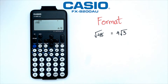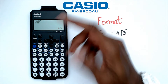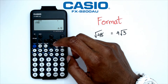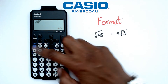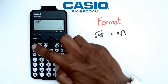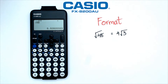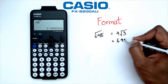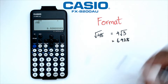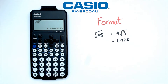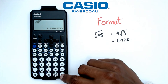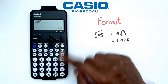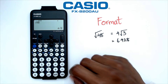Now this answer is in surd form. If we want this in a decimal, there's a couple of ways of doing this, but the shortcut I found quite handy is using the Shift and Equals button. So if you click on Shift+Equals, it's going to give you 6.928 — we're just going to stop at three decimal places here. But if you want to go back to that surd form, all you have to do is click on EXE again and it's going to send you back to the surd form.